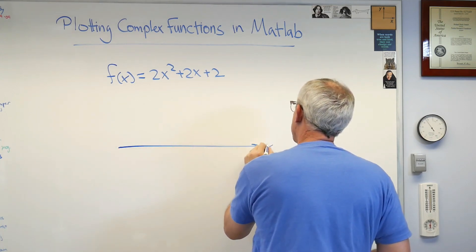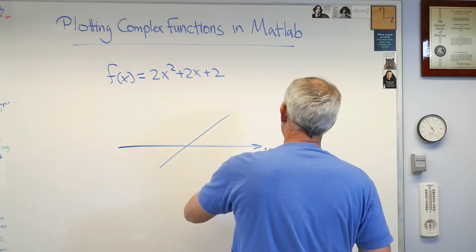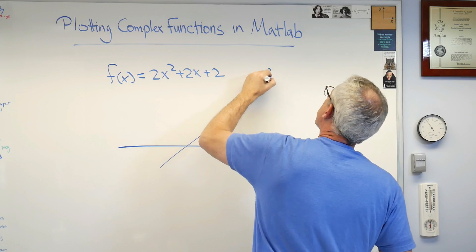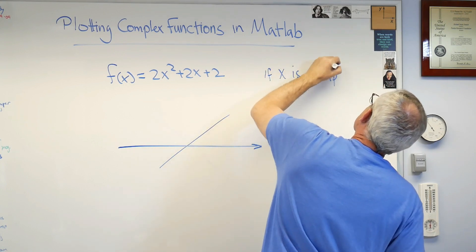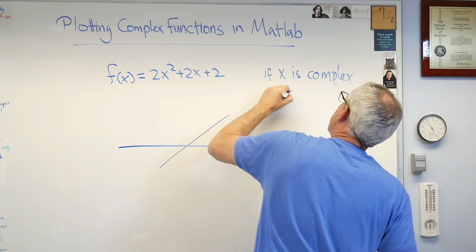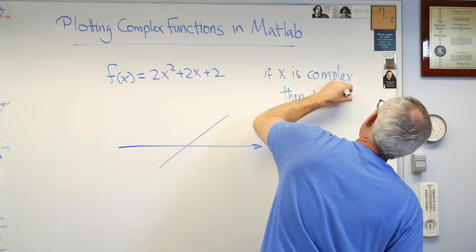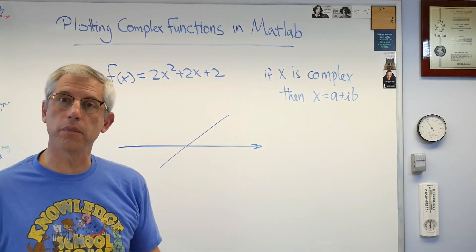If x is complex, then x is a plus ib, where a is the real part of x and b is the imaginary part of x.